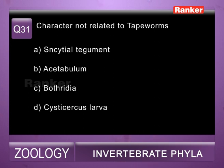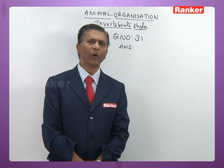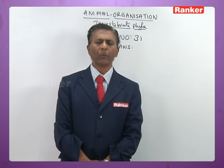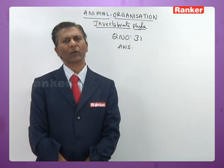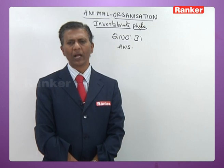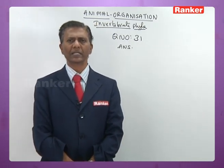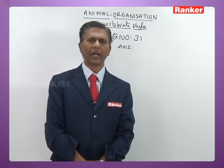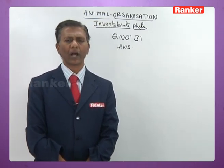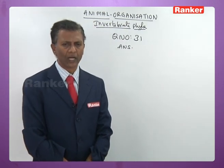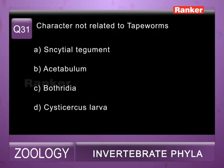Question number thirty-one: character not related to tapeworms — a) syncytial tegument (correct — outermost layer of body wall in tapeworms is syncytial tegument), b) acetabulum/suckers (correct — four suckers present), c) bothridia (wrong — bothridia are longitudinal slits present in Diphyllobothrium latum, the broad fish tapeworm, but not in Taenia), d) cysticercus larvae (correct). So thirty-first question correct answer is c.